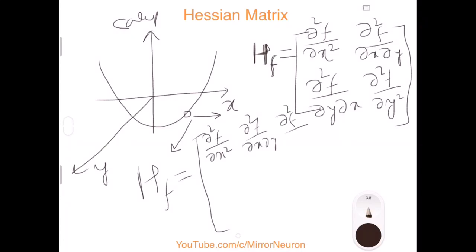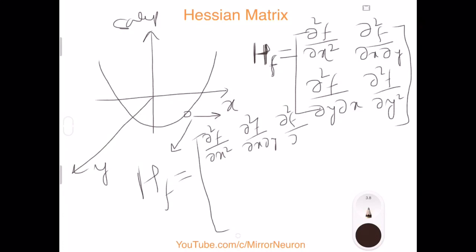For the time being, just keep in mind that Hessian Matrix is just storing all these derivatives in a matrix form so that it becomes easier for us to track them. Then we have d square f dy dx, then we have d square f dy square, and then we have d square f. So the second line is basically the derivative with respect to y.